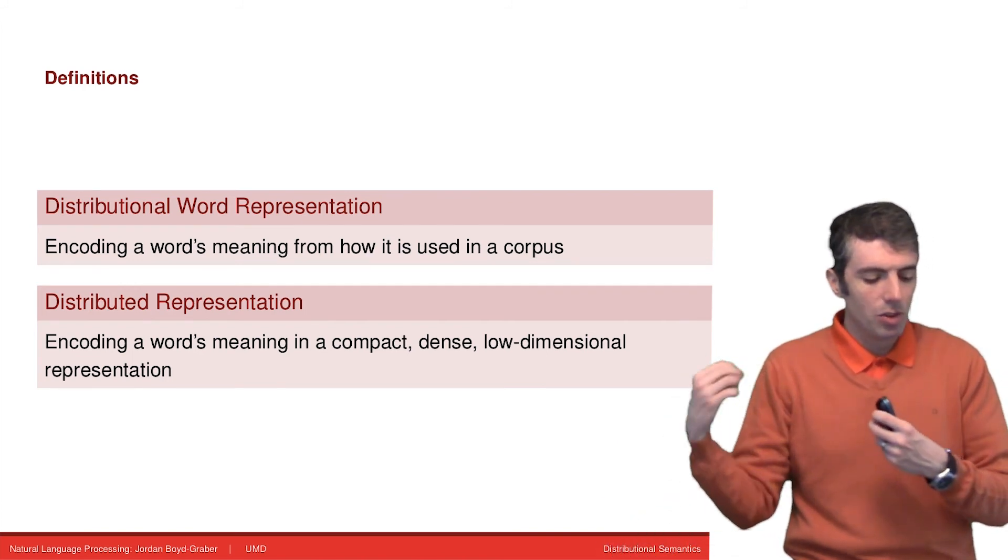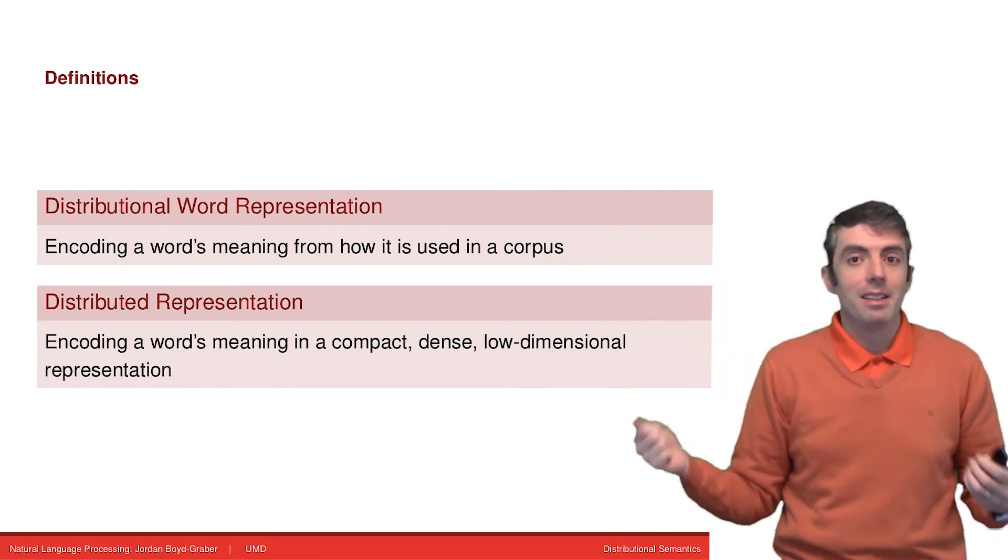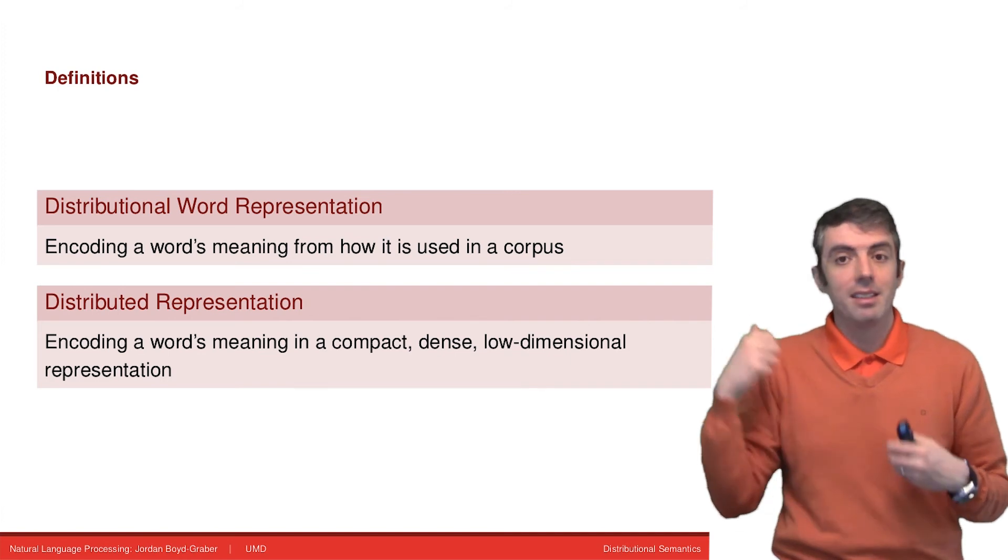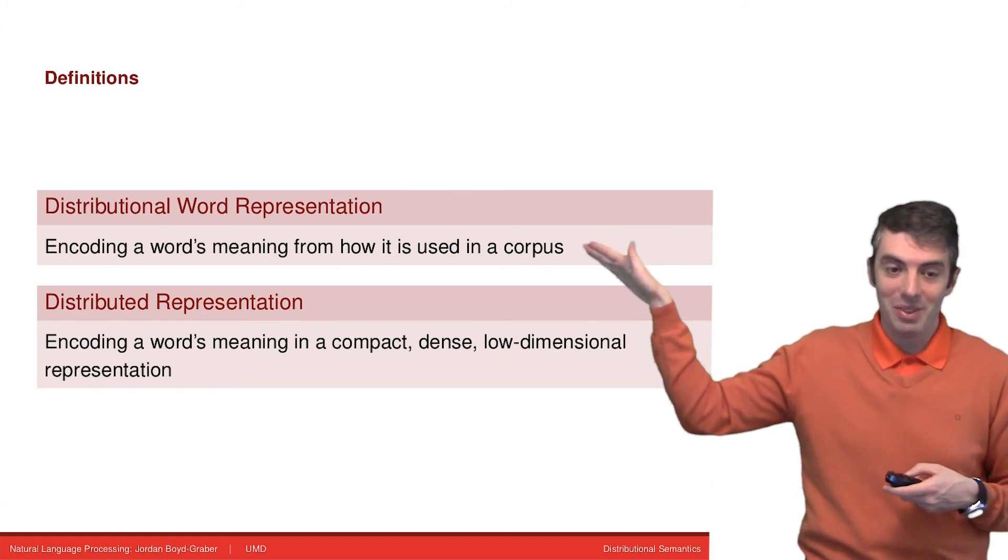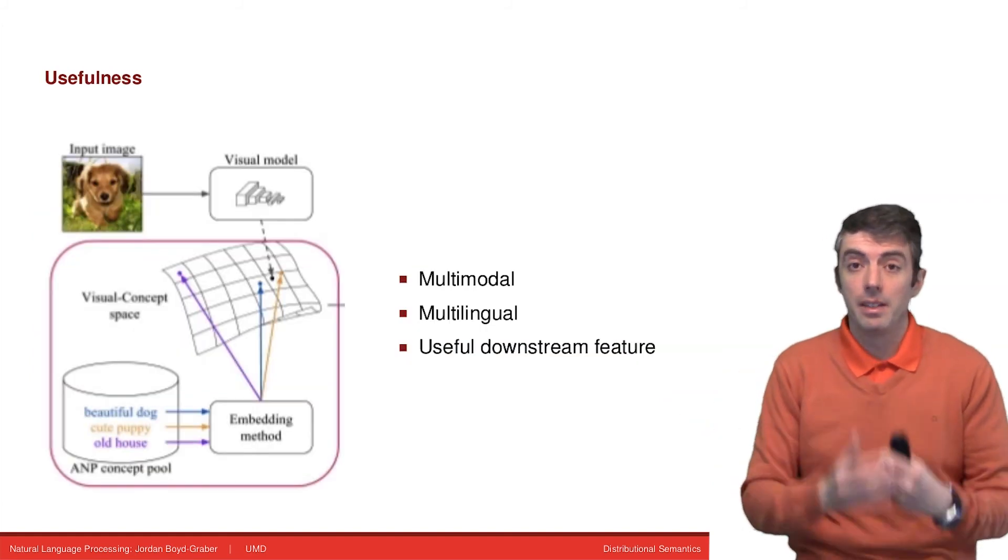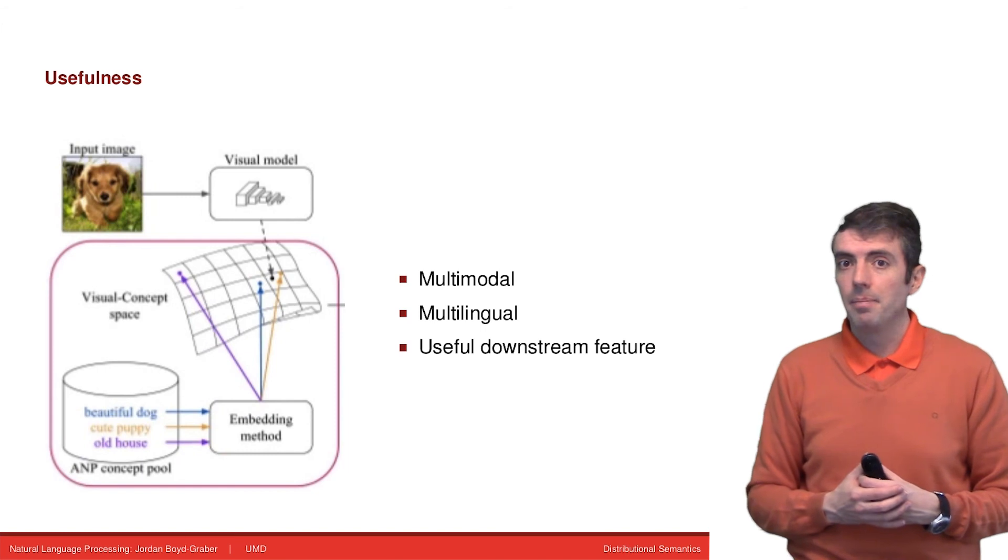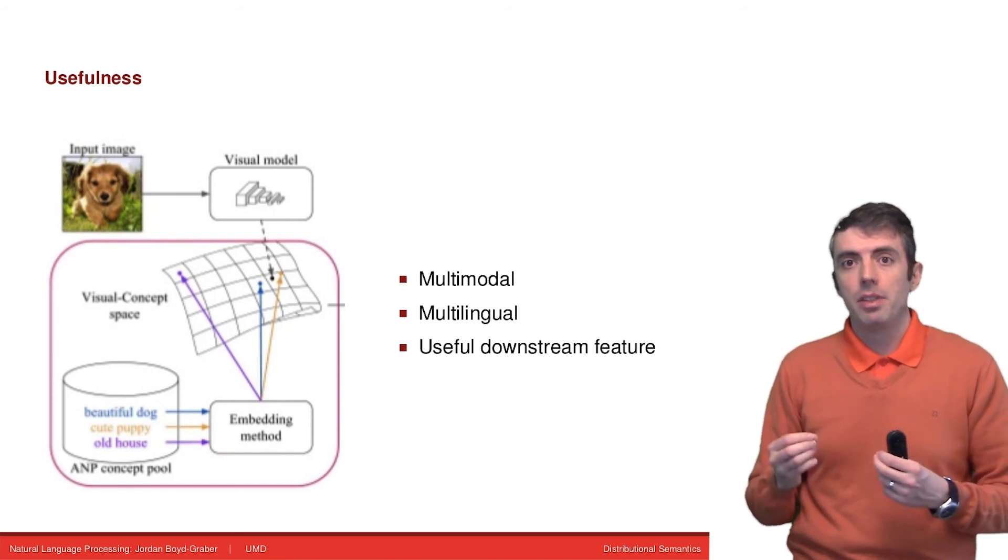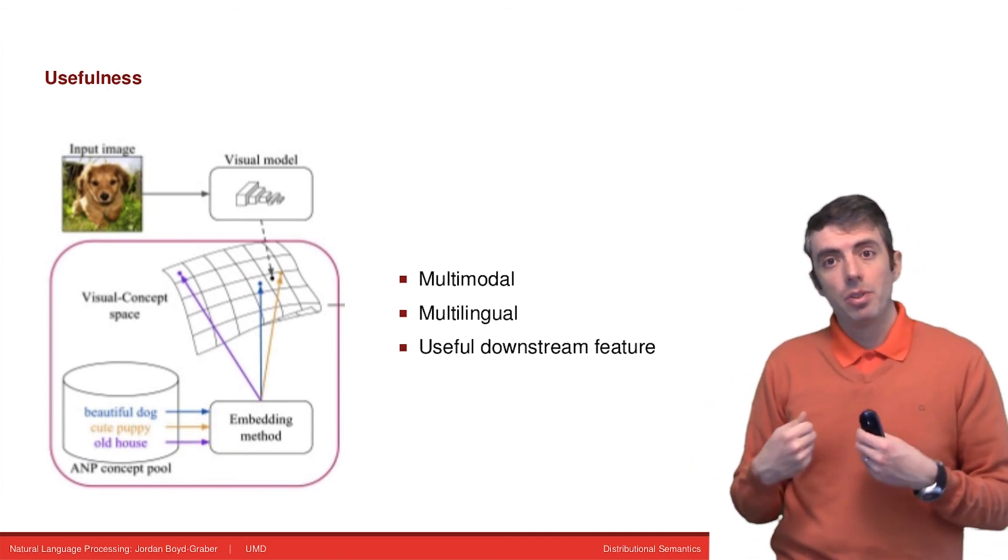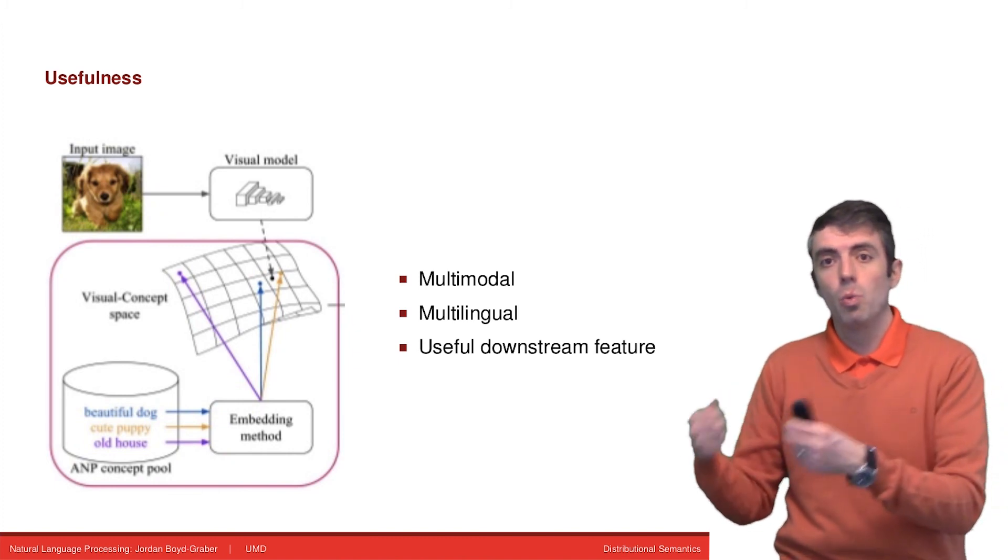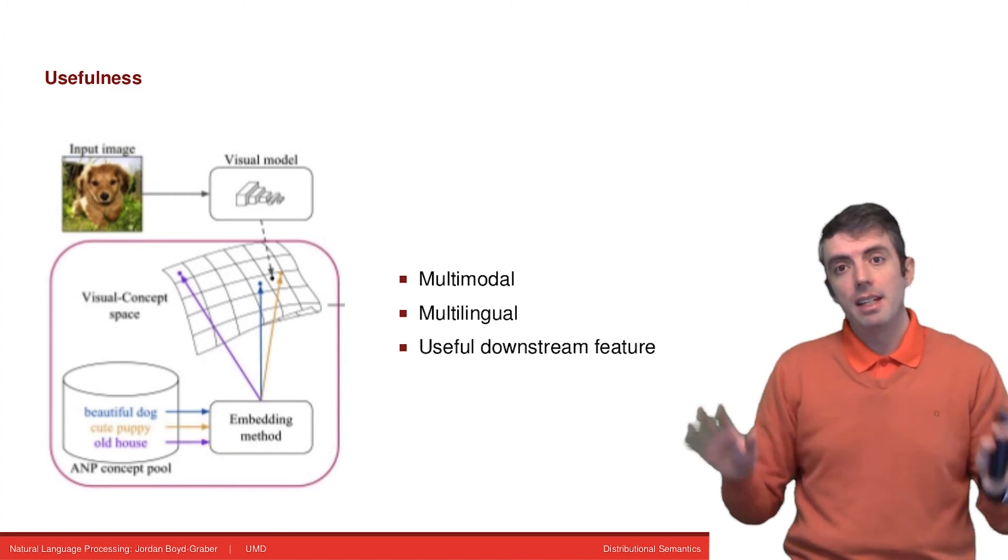If you go a step further and use a distributed representation, that's using something like a vector to create a compact, low dimensional representation of a word's meaning. Not all distributed representations are distributional, but most of the time they are. These words are used a lot together because the biggest use of distributed representations is for distributional semantics. These representations are very useful, and I don't think it's going too far to say that they've revolutionized natural language processing. Why have they been so important and so successful?